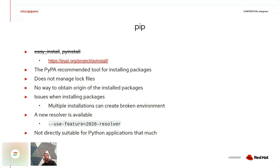You can also end up with a broken environment when using pip, mostly caused by the resolver when multiple installation runs conflict. There is a new feature — the advanced resolver — which you can enable using '--use-feature=2020-resolver'. This resolver uses backtracking to address issues with older pip releases. As stated, pip is not directly suitable for Python applications that you develop and push into a cluster.